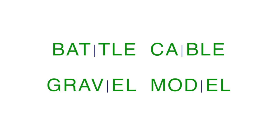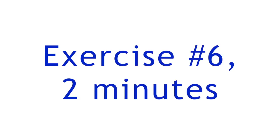While they make the same sound, EL and LE divide differently. Words ending in LE divide one letter before, but words ending in EL divide directly before. Let's try a few: battle, cable, gravel, model. Make sure you divide them before trying to sound them out — they're trickier than they look. Time for number six.